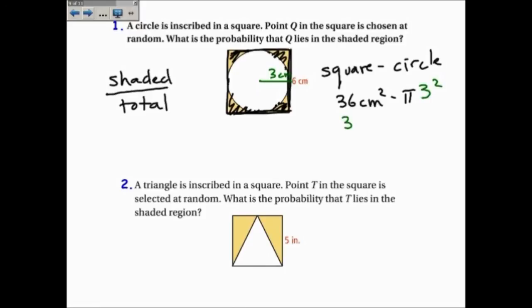So it's 36 centimeters squared minus 9 pi, but as a decimal, 36 minus 9 pi is 7.73 centimeters squared.